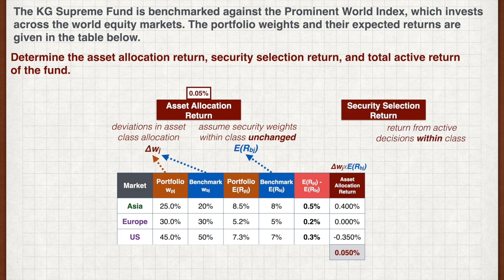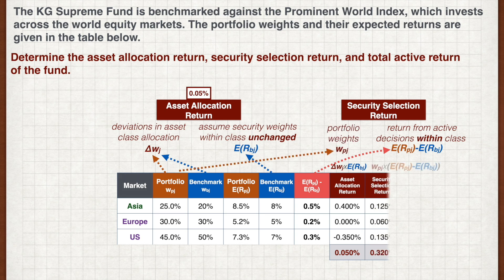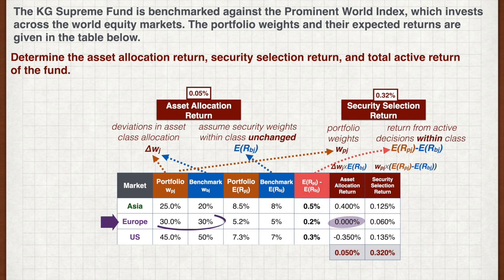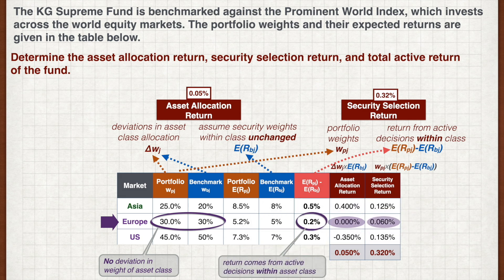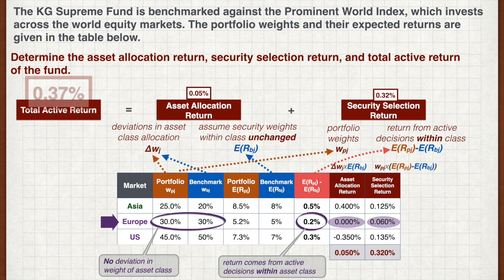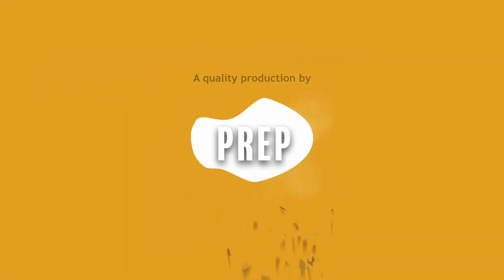The security selection return comes from active decisions within each asset class, measured by the difference in expected return for each class. We use the portfolio weights, as this is what is to be implemented for the fund. The security selection returns sum to 0.32% for the entire portfolio. Note that for Europe, asset allocation return is zero as there is no deviation in the asset class weight; however, security selection return is positive as there are active decisions within the class. The total active return is the sum of the two components, giving us 0.37%.